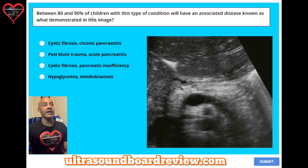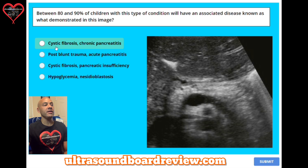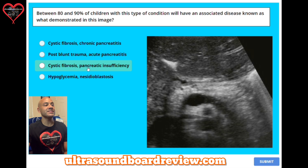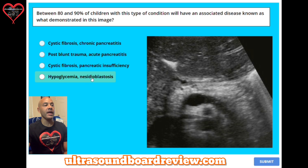Question 27. Between 80 and 90% of children with this type of condition will have an associated disease, known as what, demonstrated in this image? A: cystic fibrosis and chronic pancreatitis. B: post-blunt trauma and acute pancreatitis. C: cystic fibrosis and pancreatic insufficiency. Or D: hypoglycemia and nesidioblastosis.